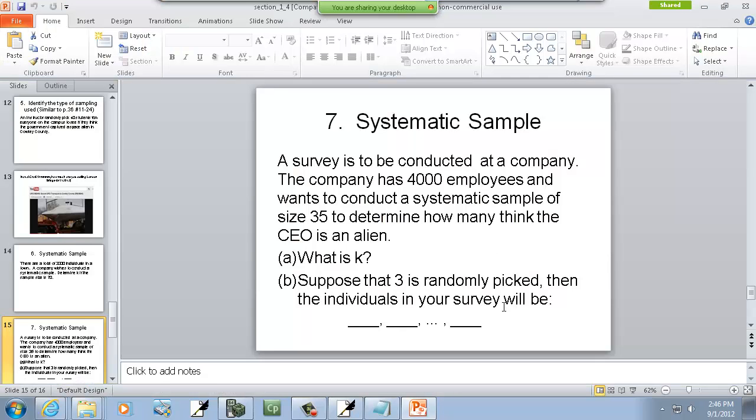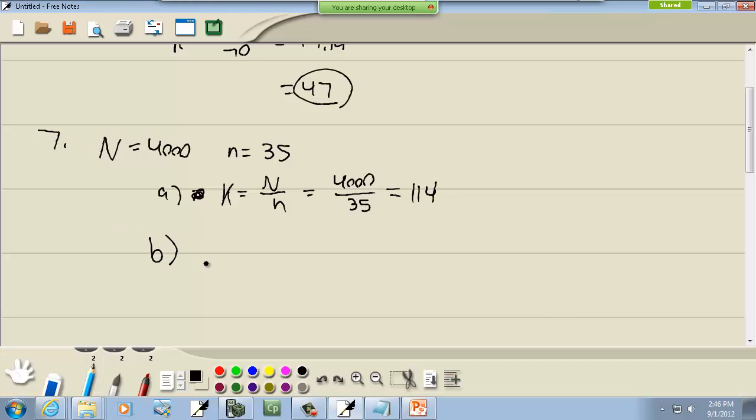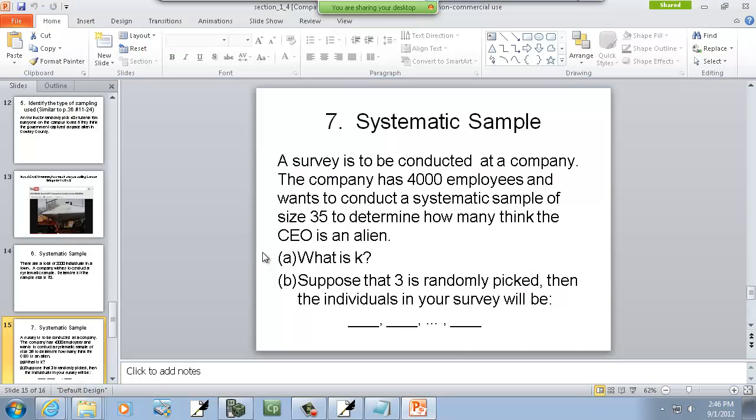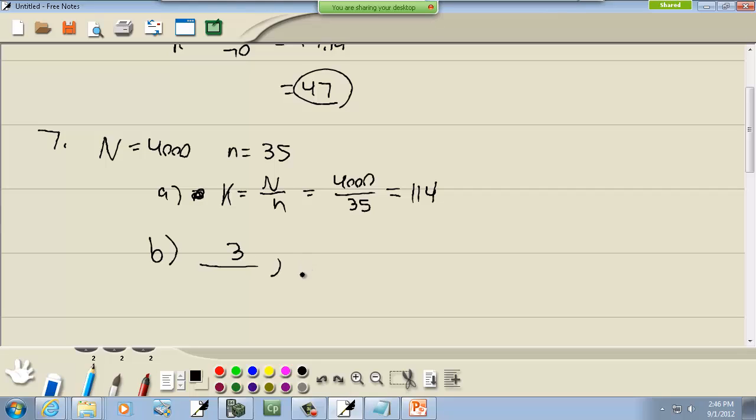Okay. Then it says, suppose a 3 is randomly picked. Then the individual population will be. So our first one, since 3 is randomly picked, first one's the third person we talked to. Then the next one, we'll take the previous value, plus 114. Well, that gives us 117. And then we take our, for the next one, I won't continue that, but we'll take our previous value, plus, and we keep adding 114. And 3, 231, if I add it correctly. It's always kind of doubtful. Why am I having so much trouble with that? Let's see, 27, 31, yeah, 231. Okay. Now our last one.